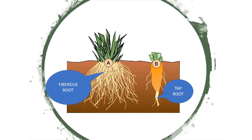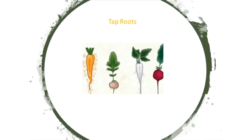As you see, taproot has one thick main root and secondary roots grow from the main root. Examples are radish, beetroot and carrot.